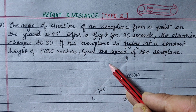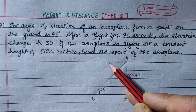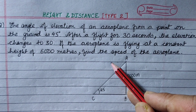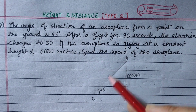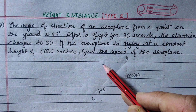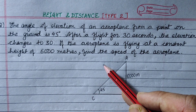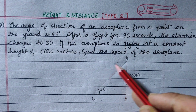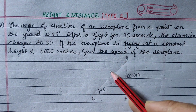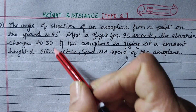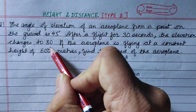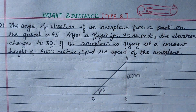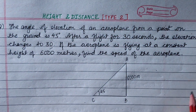The plane is observed by angle of elevation. It is towards the observer and the angle of elevation has changed. So we have to make the angle of elevation.